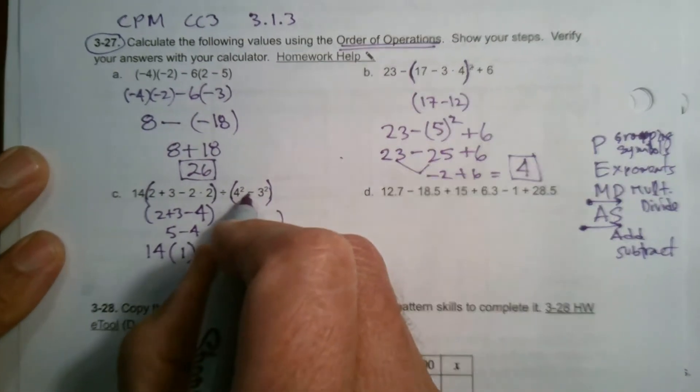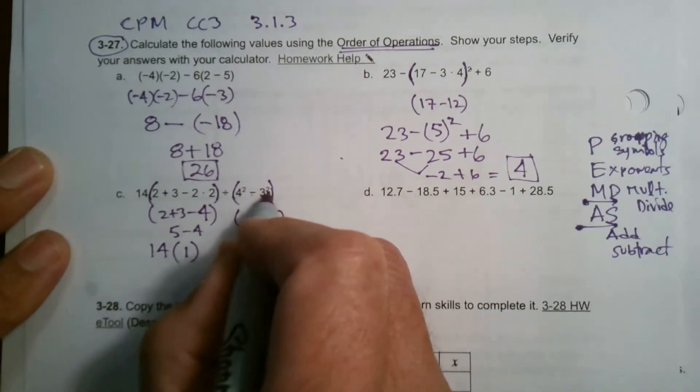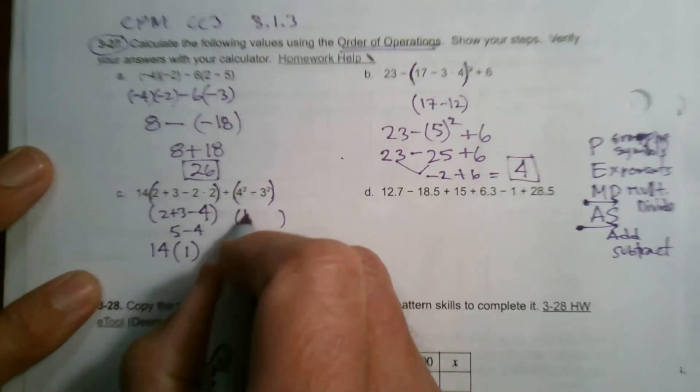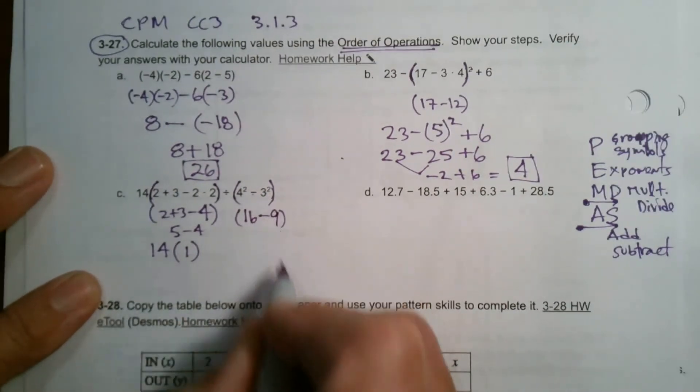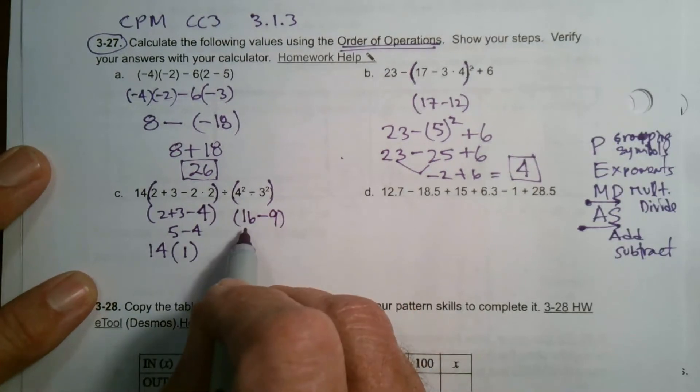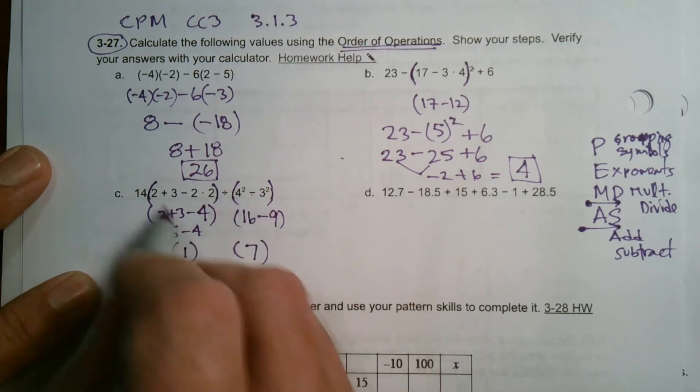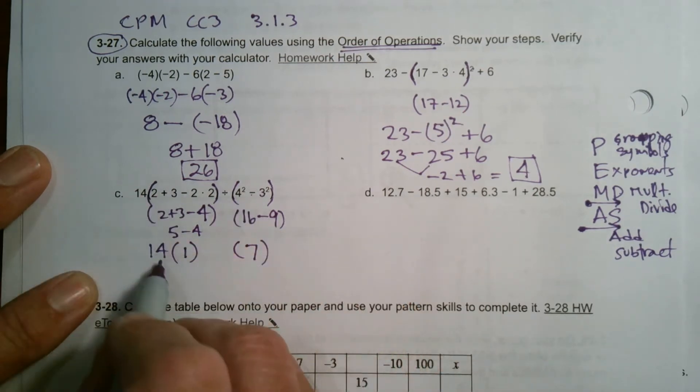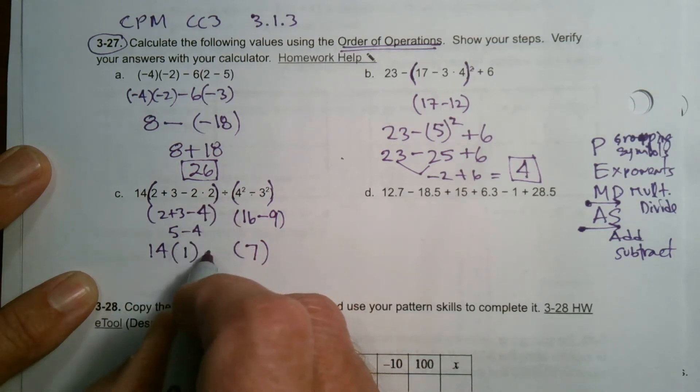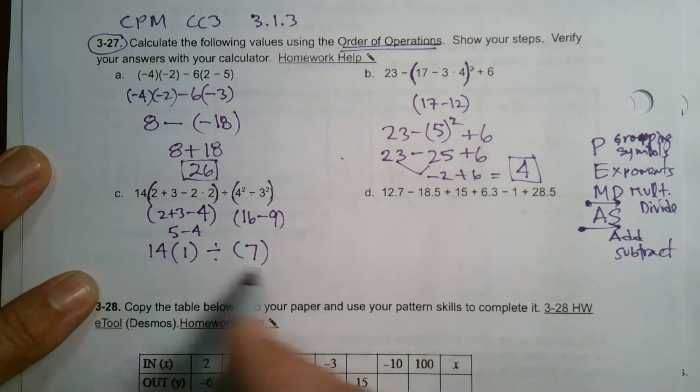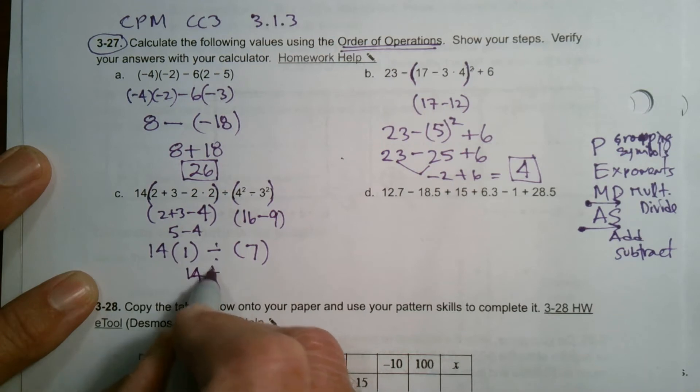And then now I've got to work this set of parentheses. In here I have subtraction and I have exponents. So I do my exponents first. Four squared is 16 minus three squared is nine. Now I can subtract. 16 minus nine is seven. So I've now down to one number inside the parentheses. That was multiplication, 14 times one, and then divided by seven. So multiply, divide is all I've got, and I just do it left to right. 14 times one is 14, then 14 divided by seven, final answer is two.